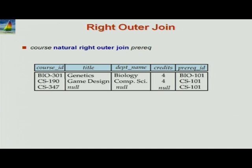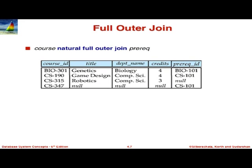There is a symmetric natural right outer join, which preserves rows in the right-hand input — in this case prereq. The row CS347/CS101 in prereq which does not match any course appears with null for all fields from course. Finally, there is a full outer join which preserves rows in both relations. The first two tuples are from the inner join — the regular join is called the inner join to contrast it with the outer join — and then the outer join adds the extra rows from both sides.